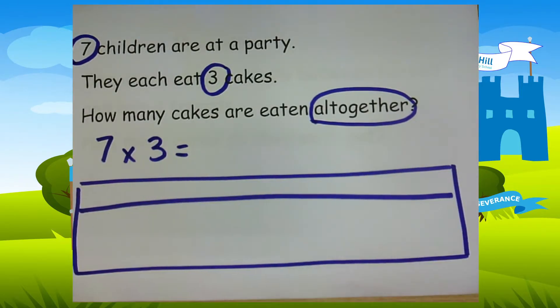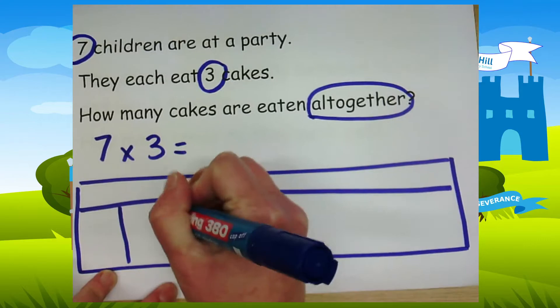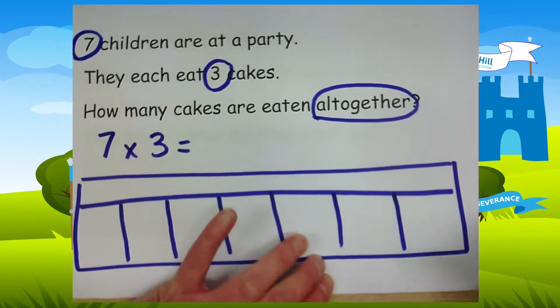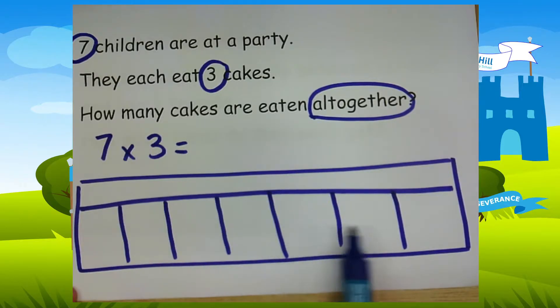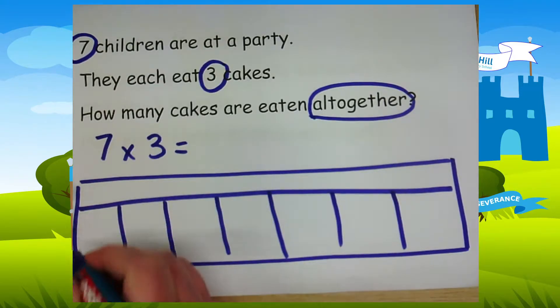Okay, you see I've got a bar model at the bottom here, and I'm going to split that up for my seven children. Okay, one, two, three, four, five, six, seven. In each of these boxes, I'm going to have each child's three cakes.